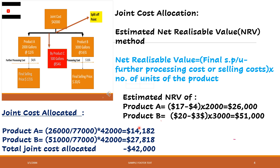That's how you calculate joint cost allocation using the estimated net realizable value method. If you have any doubts, please mail me at the address given on this slide. You can also comment below and I'll definitely get back to you with an explanation. See you in my next video — till then, take care and bye bye.